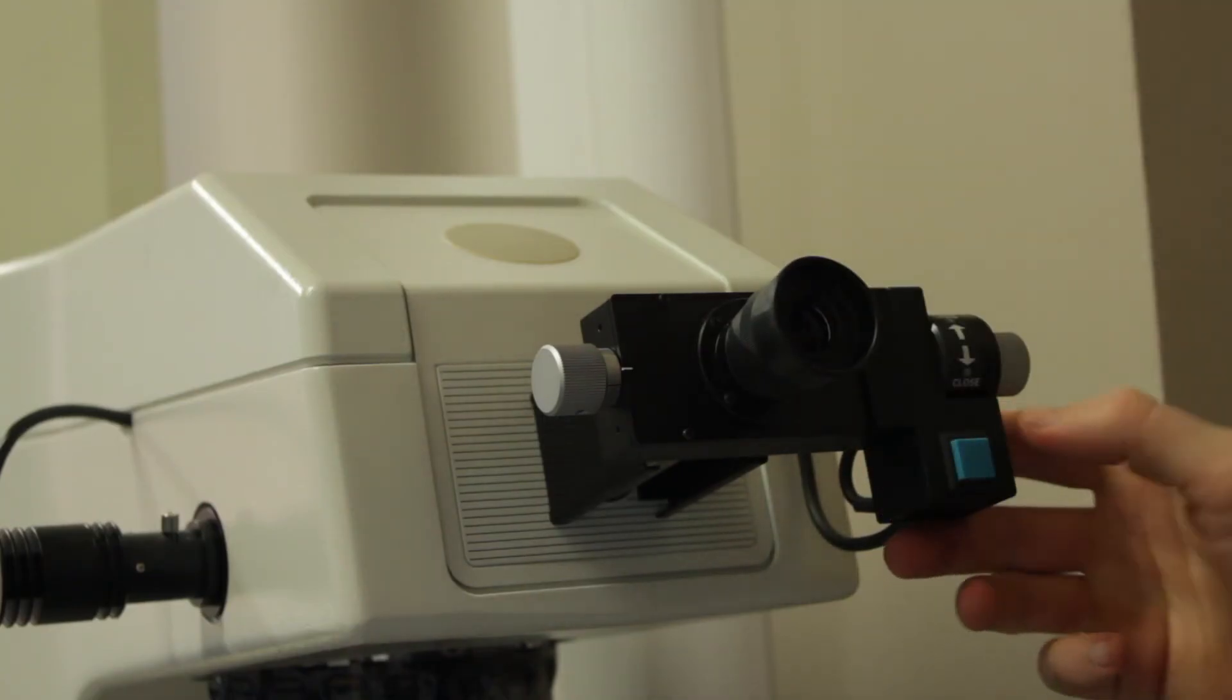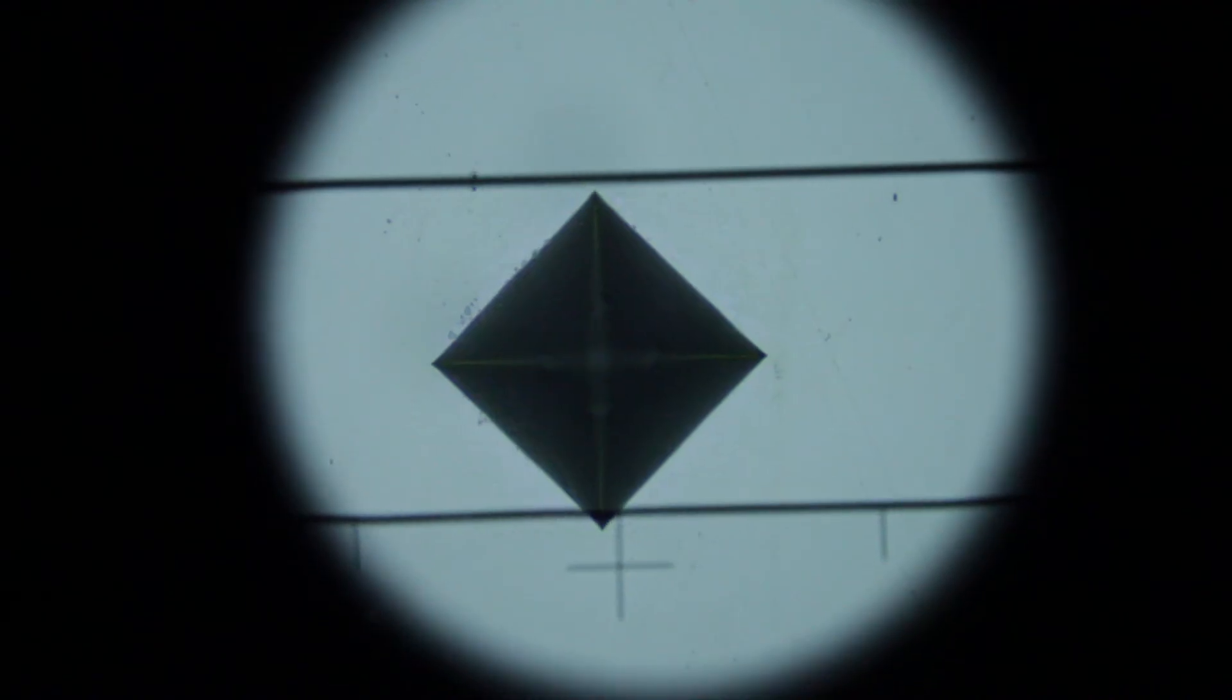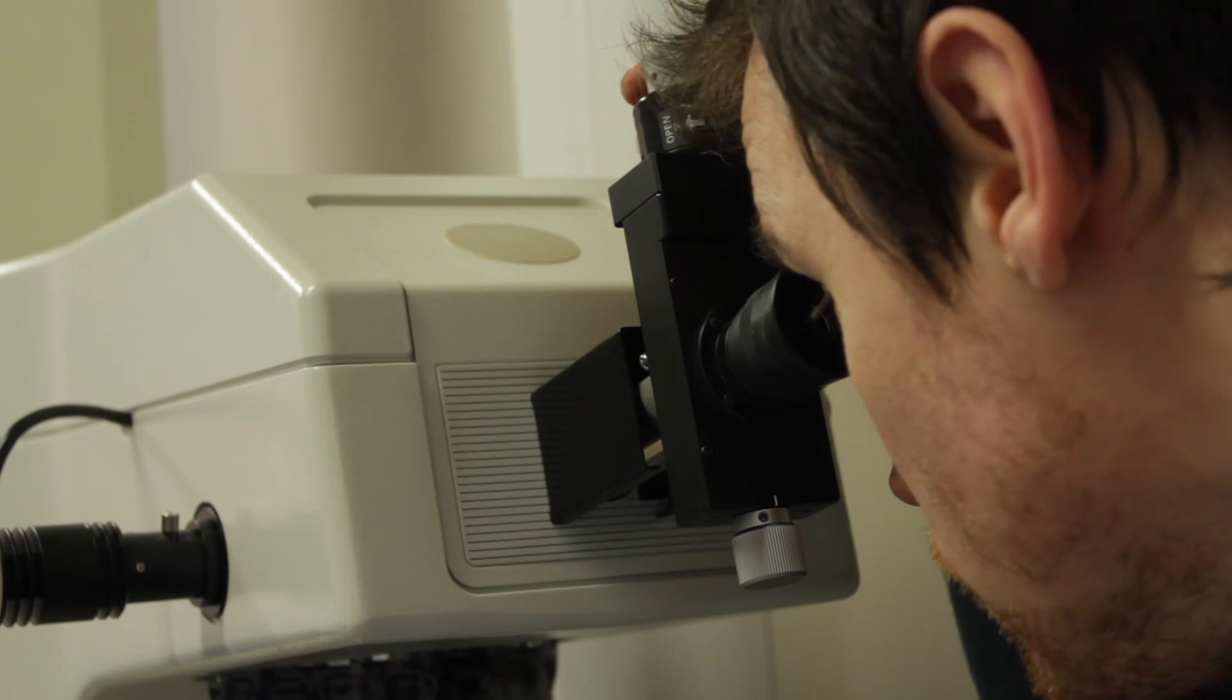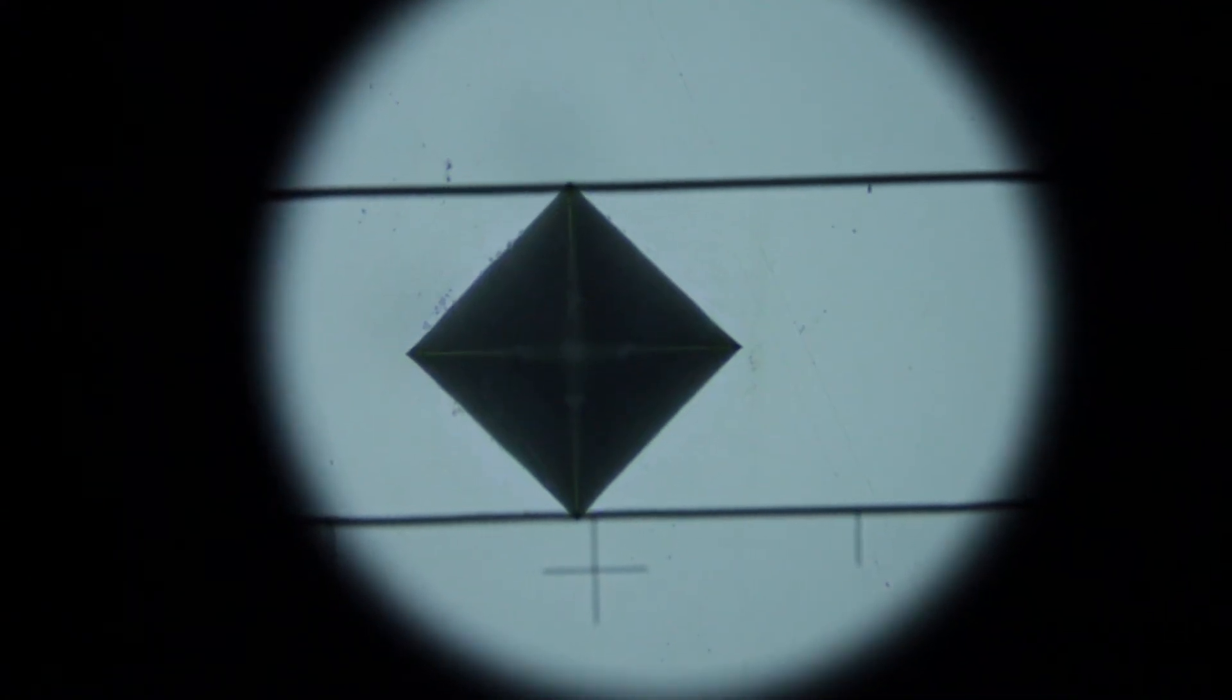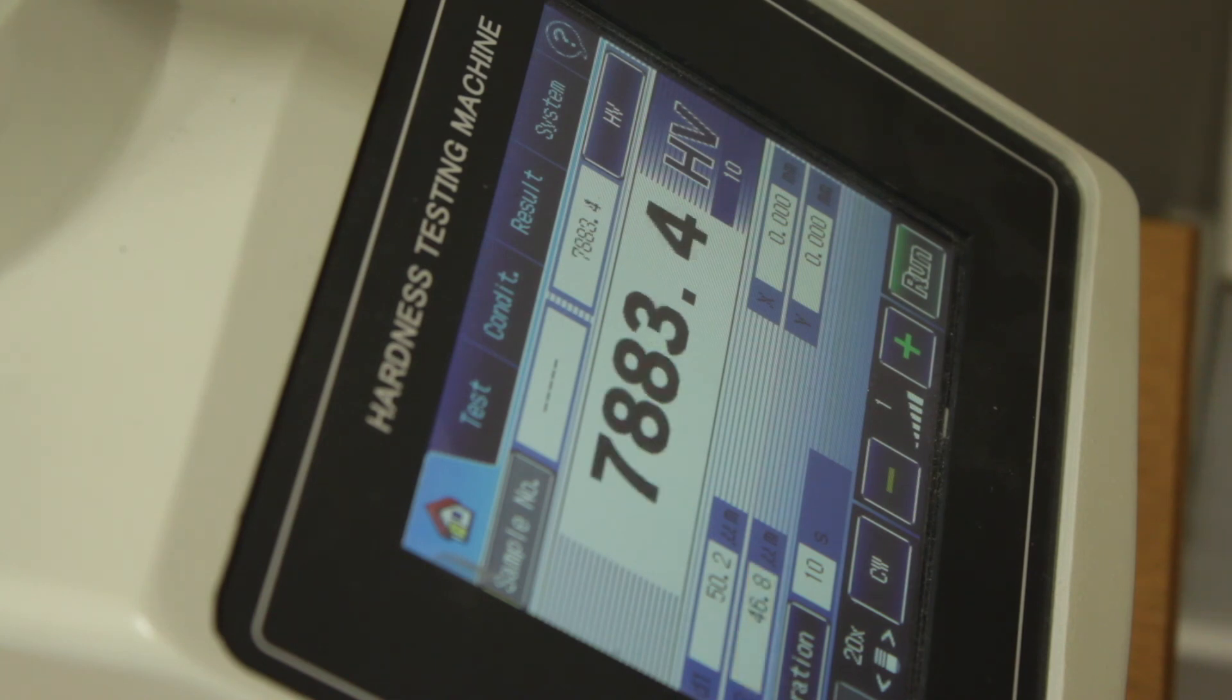When you've completed this, press the blue button and index the viewport through 90 degrees. Now complete the same process, but first adjusting the bottom line in parallel, and then using the top knob to adjust the top line so that it touches the top. When complete, press the blue button and this will yield a readout in HV.